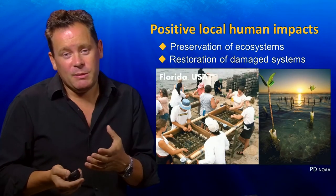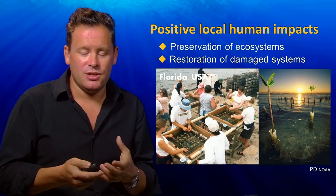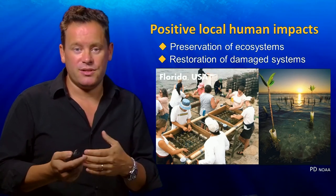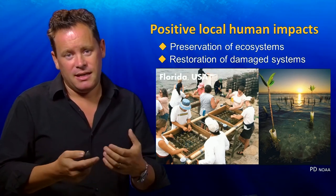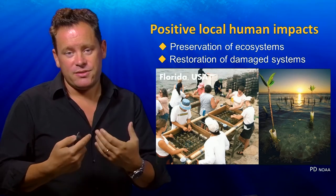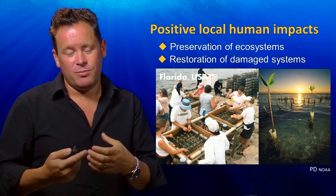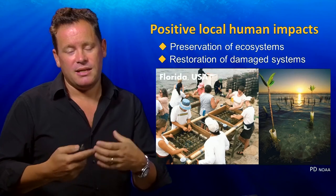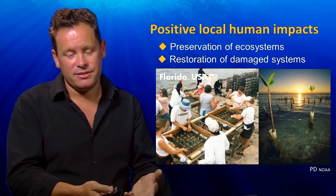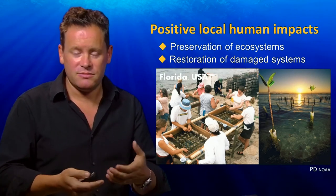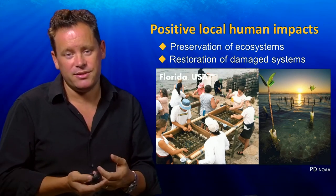Another successful approach is restoring damaged habitats. We've talked about the loss of mangroves and seagrass beds. One of the things that can be done quite successfully is to propagate those and restore them right back in their natural environment. That's been really very successful, and there are a lot of programs in Florida doing this, for example.